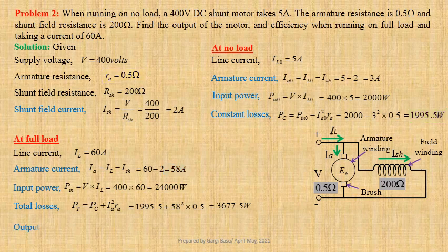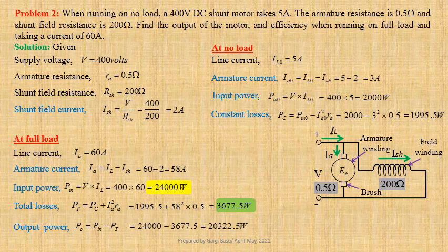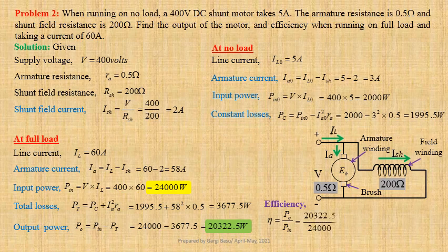Output power PO equals PIN minus PT, that is 24,000 minus 3677.5, giving us 20,322.5W. Efficiency of the motor eta equals PO by PIN, that is 20,322.5 divided by 24,000, giving us 0.8468 per unit or 84.68%.